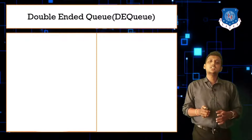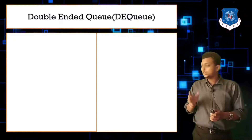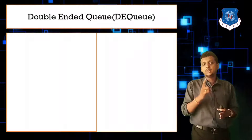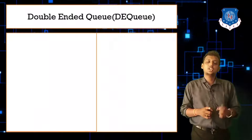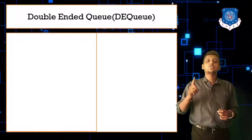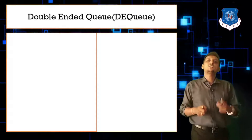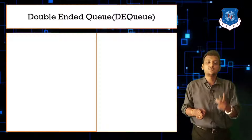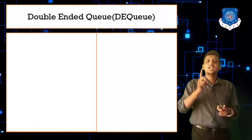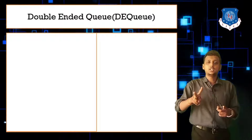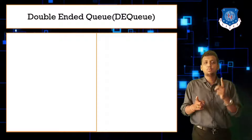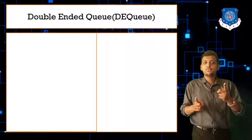In a simple queue, we have only two ends: one end used for insertion and the second end used for deletion. The end used for insertion is known as rear and the end used for deletion is known as front. But in DEQ, you can do insertion and deletion both operations using the rear end, and insertion and deletion both operations using the front end.